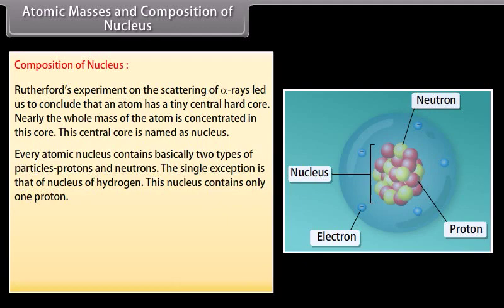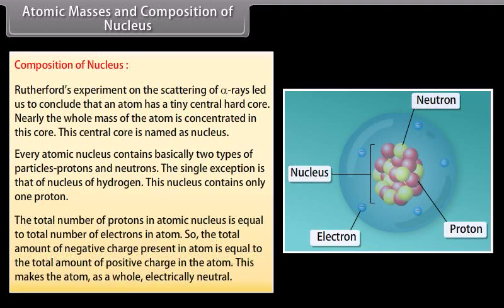Every atomic nucleus contains basically two types of particles: protons and neutrons. The single exception is that of nucleus of hydrogen. This nucleus contains only one proton. The total number of protons in atomic nucleus is equal to total number of electrons in atom. So, the total amount of negative charge present in atom is equal to the total amount of positive charge in the atom. This makes the atom as a whole electrically neutral.